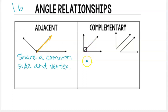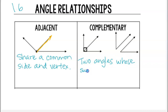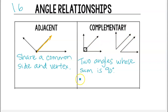So the definition of complementary is two angles whose sum is 90 degrees. These angles can be adjacent, as we see here in this diagram, or they can be non-adjacent.